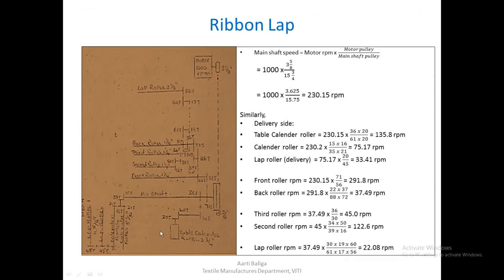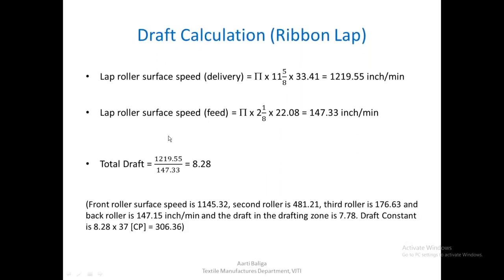Just as with the sliver lap machine, we have the gearing diagram and the corresponding calculations, which you can verify. The total draft for the entire ribbon lap machine is calculated from the surface speed of the feed and delivery lap rollers, giving a total draft of 8.28. We can also calculate intermediate drafts and the draft constant.